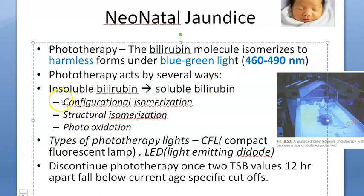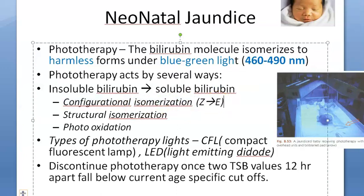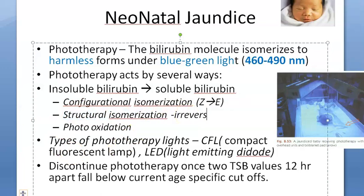How does this happen? Because of isomerization — specifically configurational isomerization. The Z isomers of bilirubin are converted into E isomers; Z will become E. This is instant on exposure to light. Then structural isomerization happens — this is irreversible.